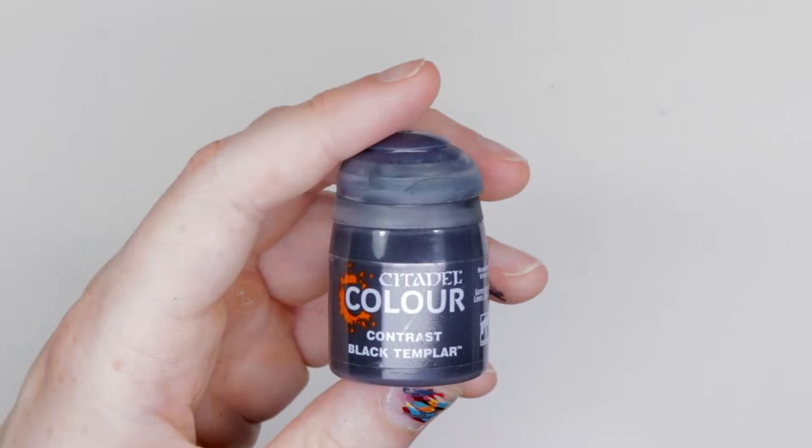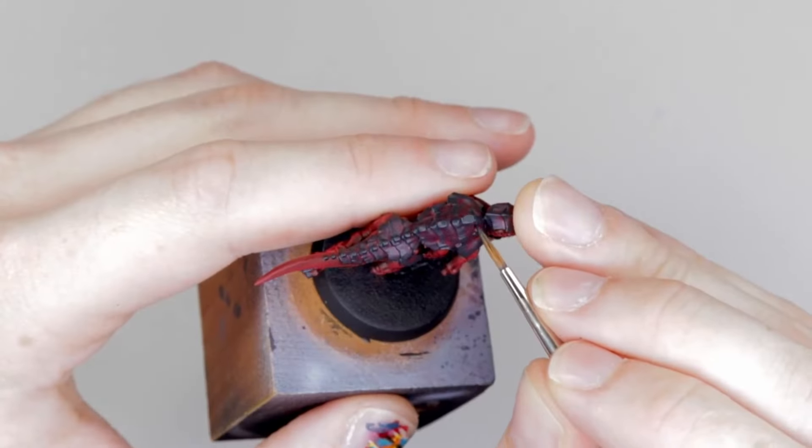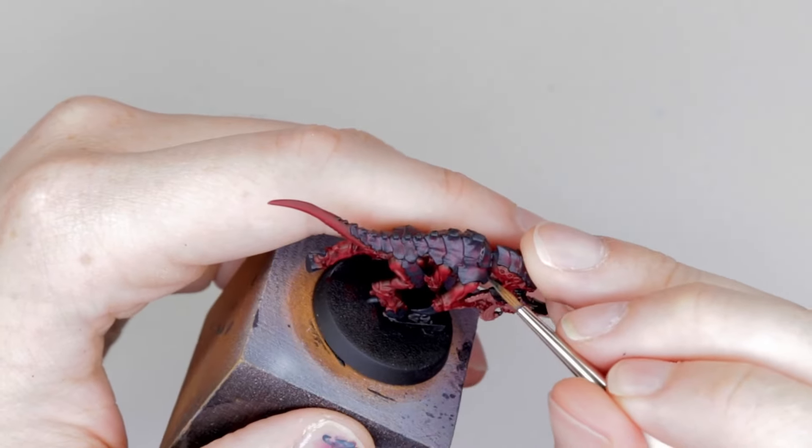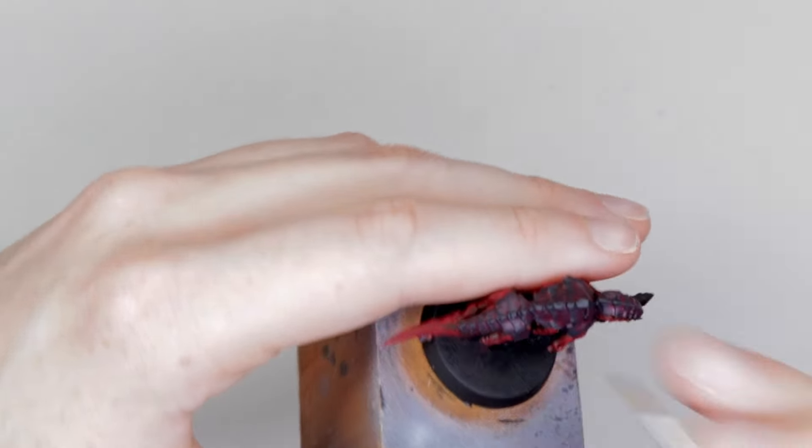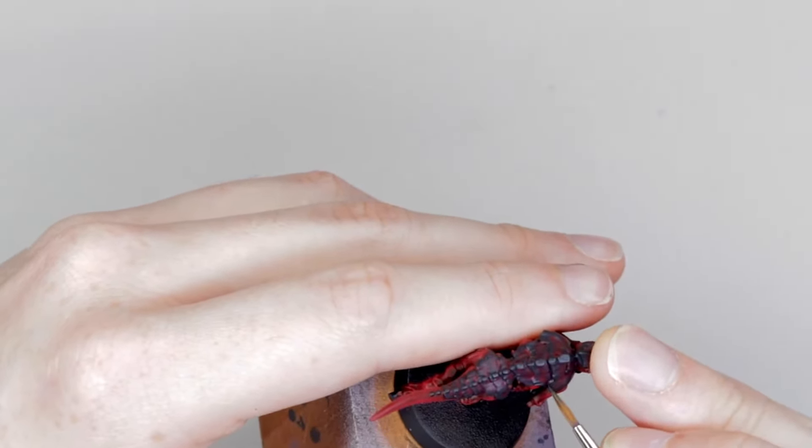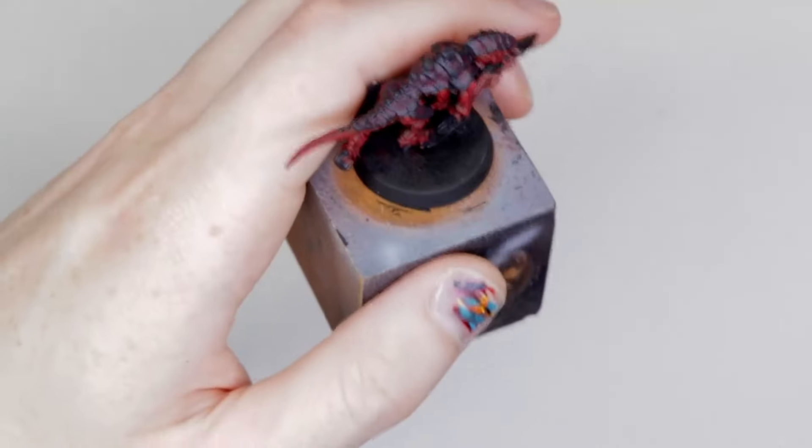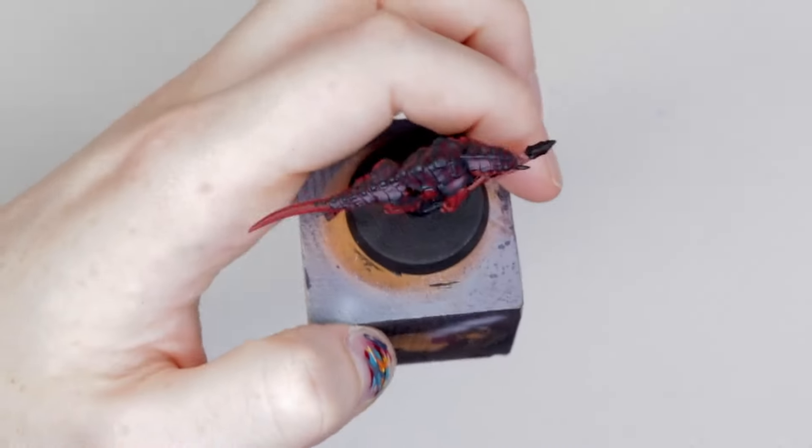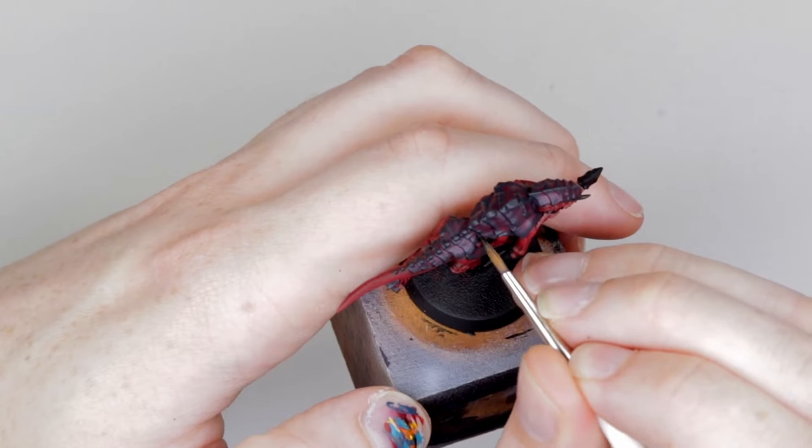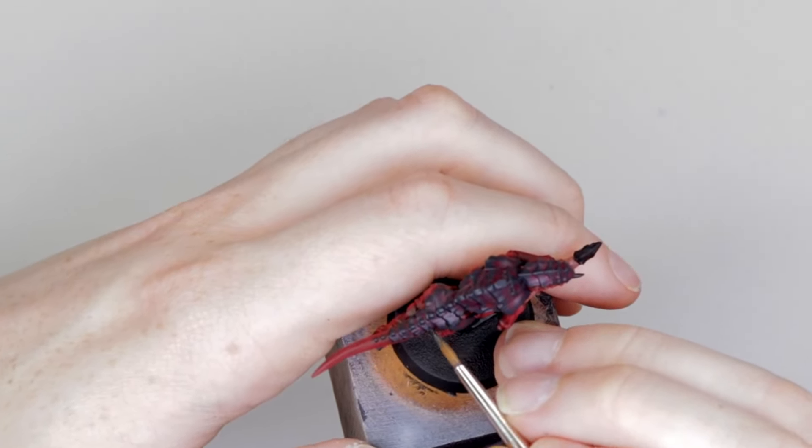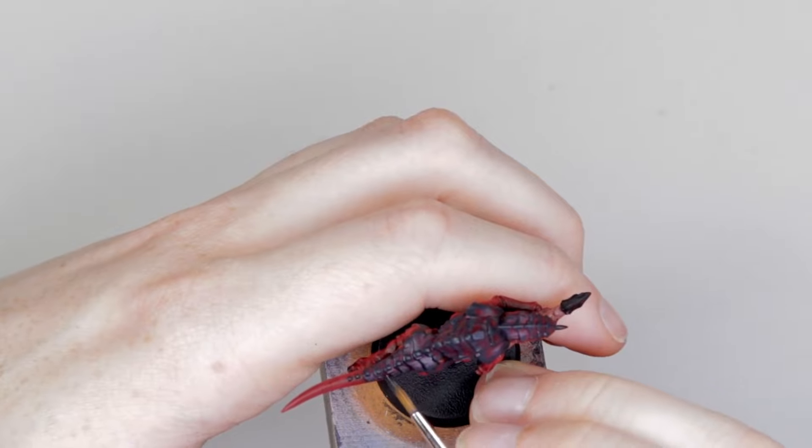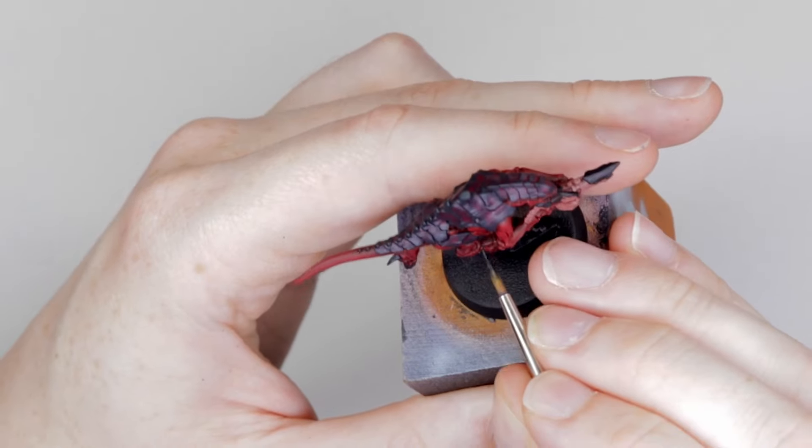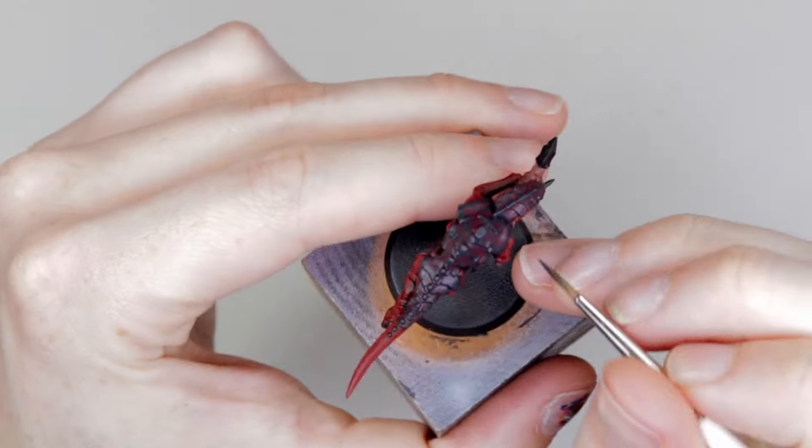After that, we're going to get Black Templar, another black contrast paint. It's got worse coverage than Black Legion, but that's why we're using it here, because we're just using it as a shade. Make sure you don't have too much on your brush because we don't want to cover up the work that we've done with the Khorne Red wash. We're just going to paint this into the shadowed areas of the armor panels to give it some depth and definition and let the other colors really pop. Into the crevices from where the chitin overlap and also any smaller divots or scratches along the spines or edge of the armor panels.